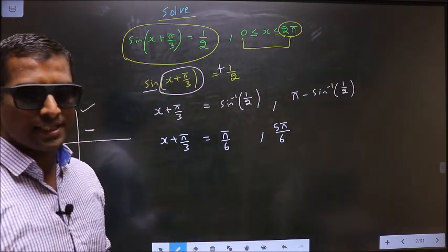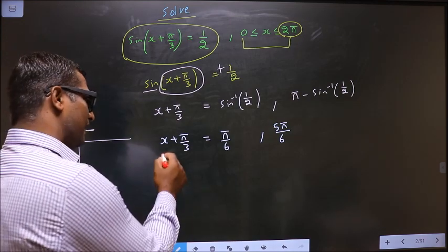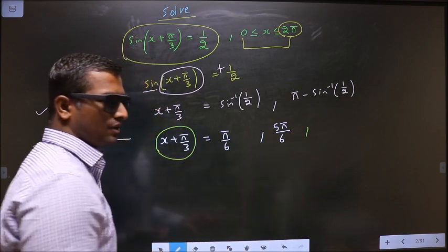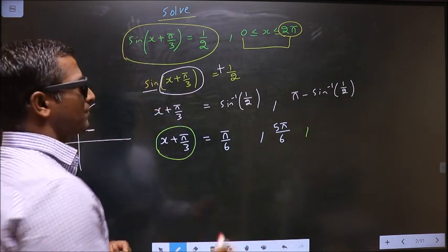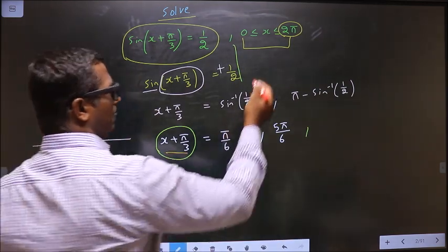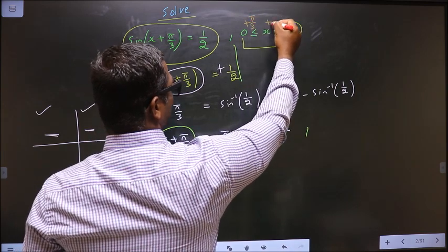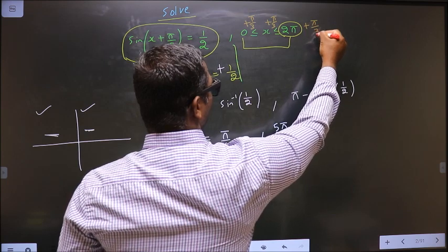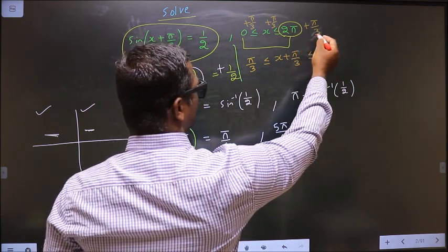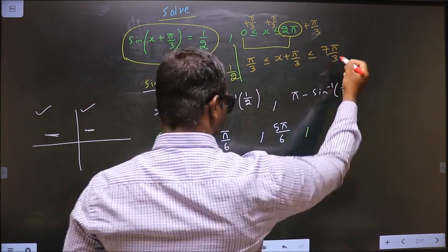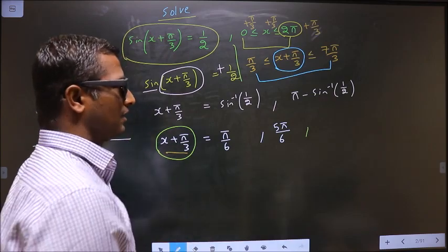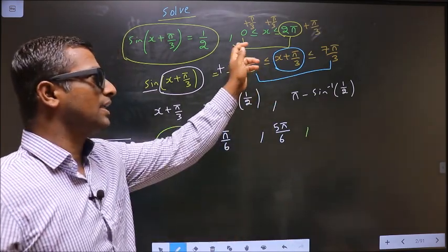Now the question arises: in what interval should the angles for x + π/3 lie, and should we find more angles? To answer that, since x lies in the interval 0 to 2π and we have x + π/3, we add π/3 throughout. So we get π/3 ≤ x + π/3 ≤ 2π + π/3, which results in 7π/3. So the values for x + π/3 must lie in the interval [π/3, 7π/3].